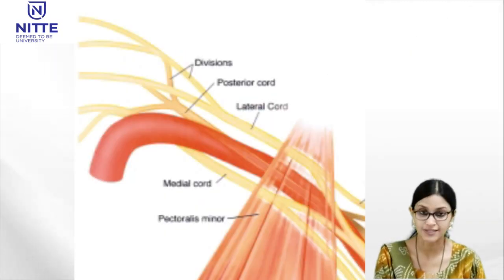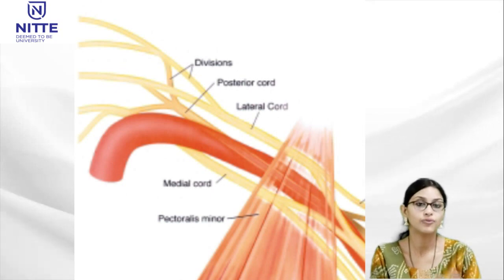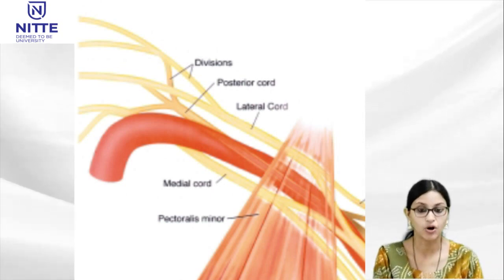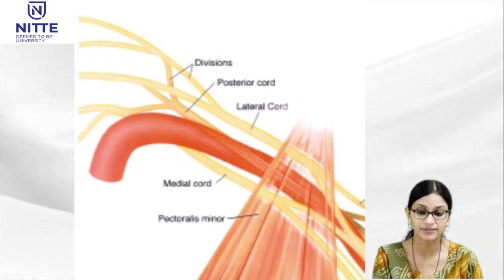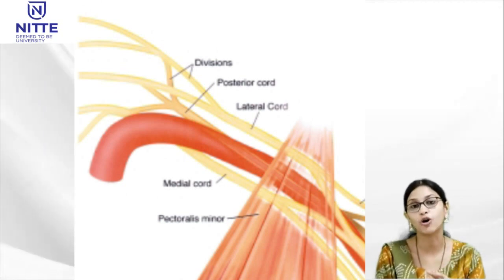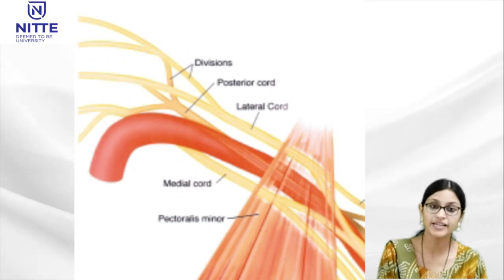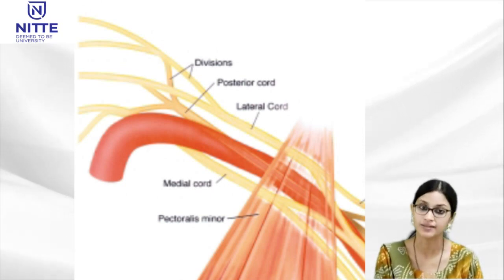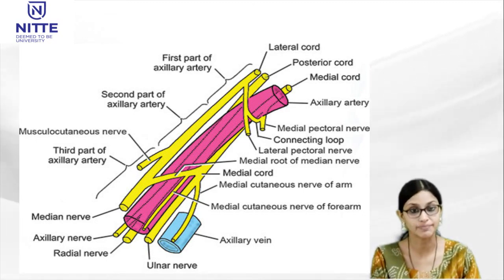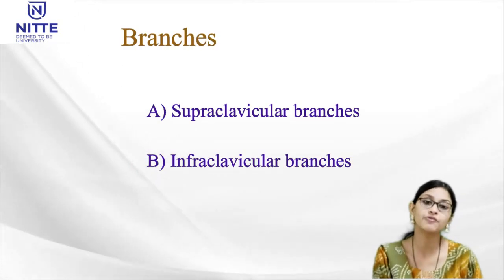The three cords enter the axilla and are arranged according to their relation with the second and third parts of the axillary artery. Lateral and posterior cords are lateral to the first part of axillary artery, and the medial cord is behind the axillary artery — so the names do not match the relation with the first part. As it approaches the second part of axillary artery, the lateral cord lies laterally, medial cord lies medially, and posterior cord lies posterior to the second and third part of axillary artery.